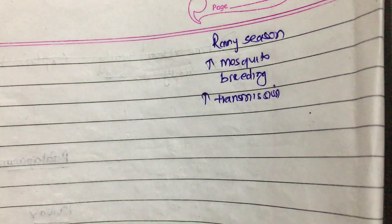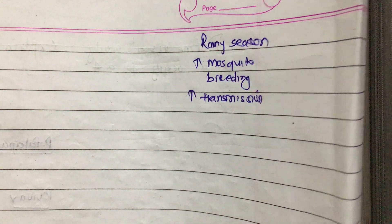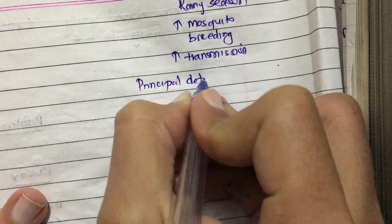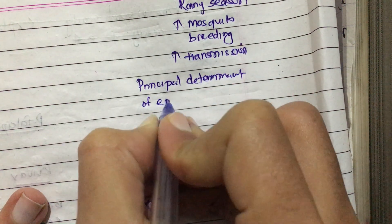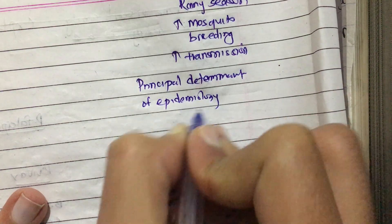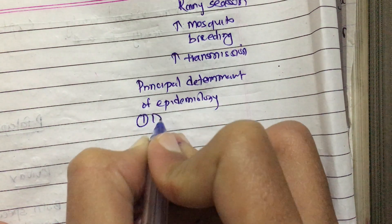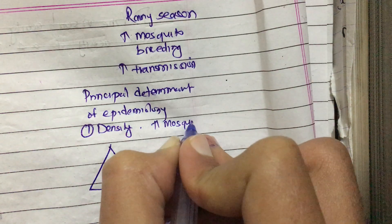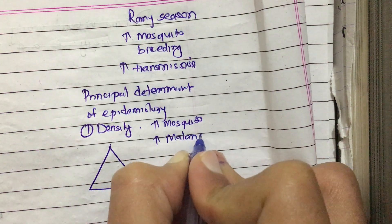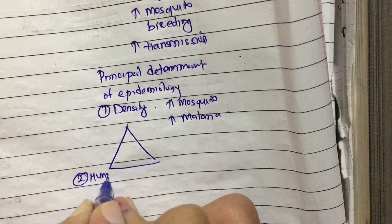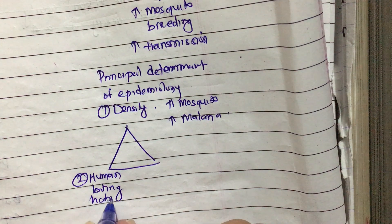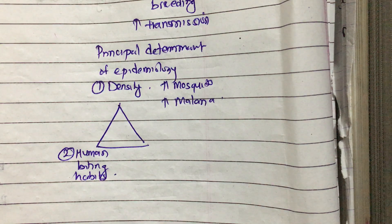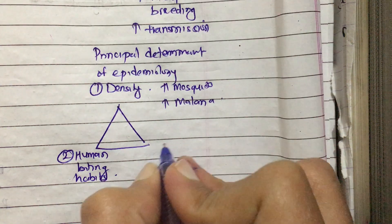The principal determinants of epidemiology are: first, the density of the vector — if there are more mosquitoes, there is more malaria. Second is human biting habit — if the mosquito preferentially bites humans, then it is an efficient vector and there is more malaria.